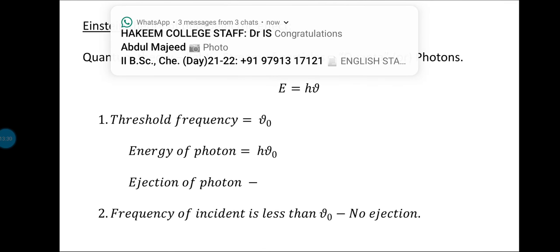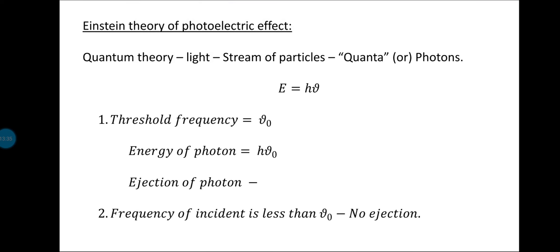Now we will see Einstein's theory of photoelectricity, also known as the quantum theory of photoelectricity. Einstein explained the photoelectric effect using the ideas of modern quantum theory. According to modern quantum theory, light is made up of a stream of photons — quanta — each having energy E = hν, where ν is the frequency and h is Planck's constant.